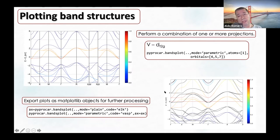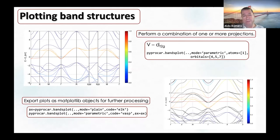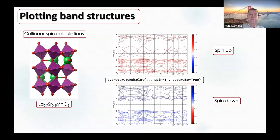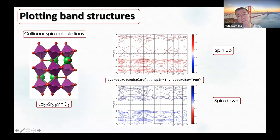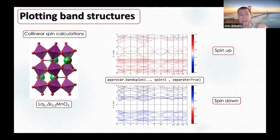I can superimpose different band structures from two different electronic structure codes—for example, comparing results from Elk and Abinit. I can also plot different spin channels: spin up and spin down, each with different colors. I can superimpose them or plot them independently.